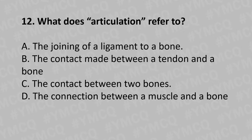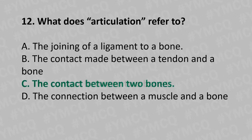Moving to our 12th question: What does articulation refer to? Option A: the joining of a ligament to a bone, Option B: the contact made between a tendon and a bone, Option C: the contact between two bones, Option D: the connection between a muscle and a bone. The answer is Option C: the contact between two bones.